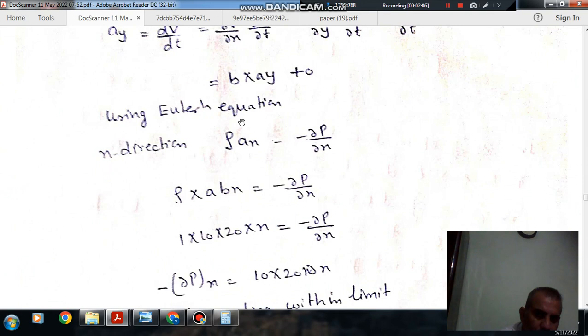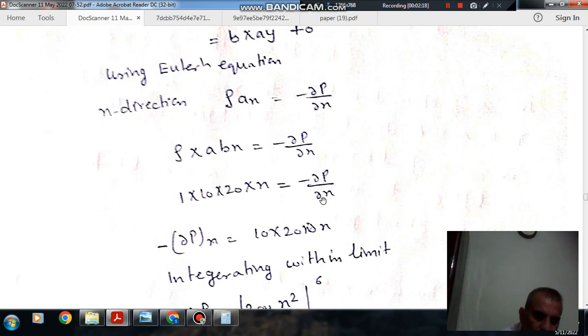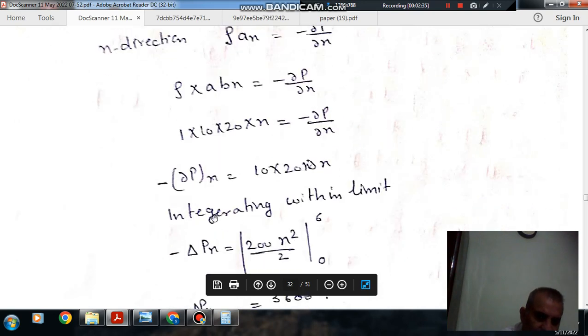Now, using Euler's equation in X direction: ρAx equals minus ∂P/∂x. This is ρABX, so ∂P/∂x will be minus ρABX.